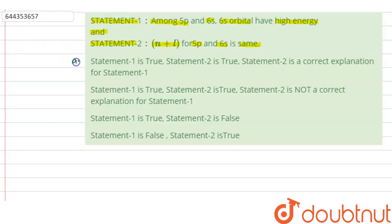Option A: statement 1 is true, statement 2 is true, statement 2 is a correct explanation for statement 1. Option B: statement 1 is true, statement 2 is true, statement 2 is not a correct explanation for statement 1.